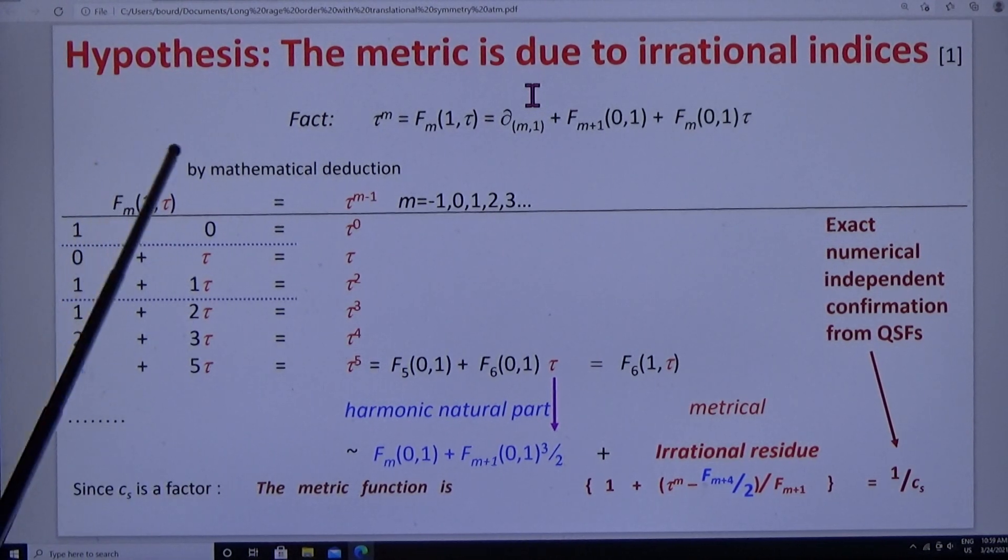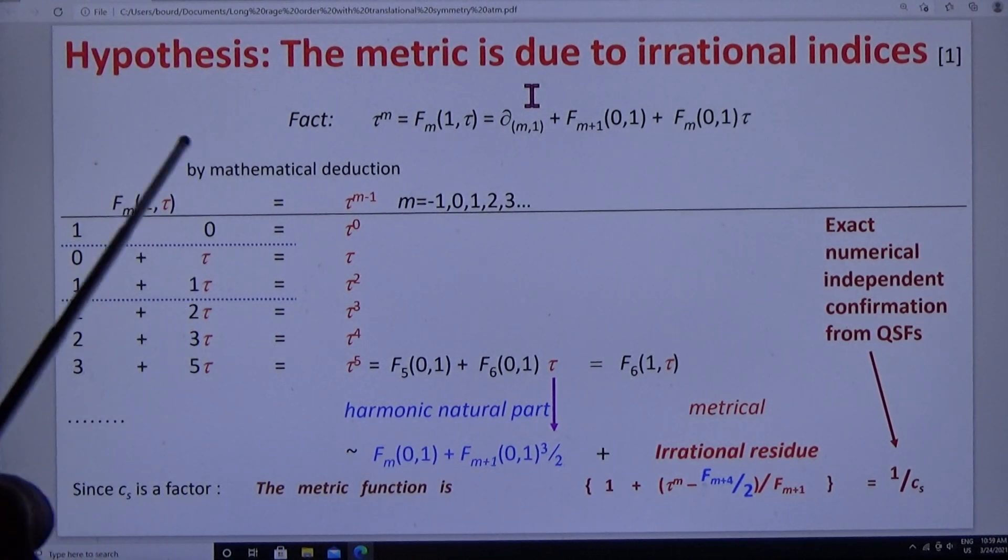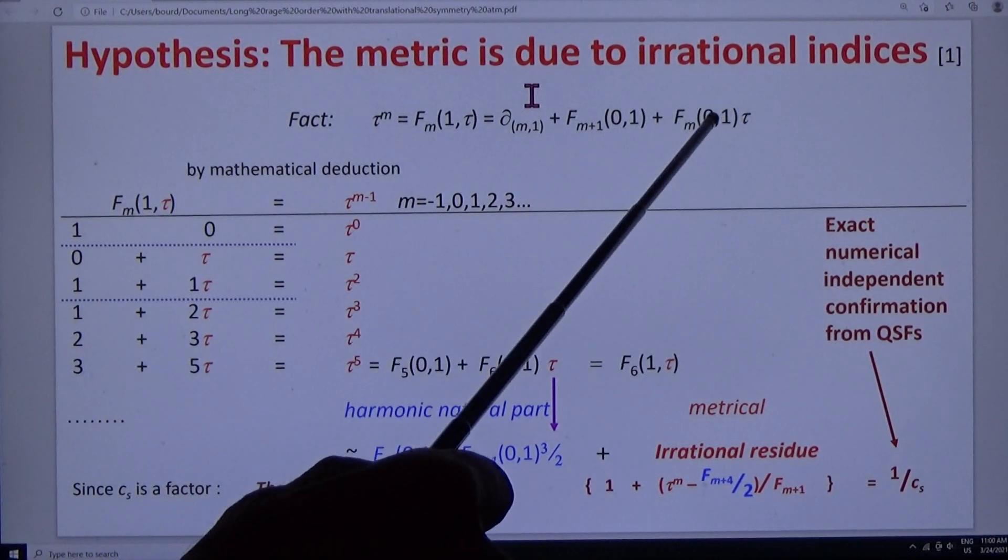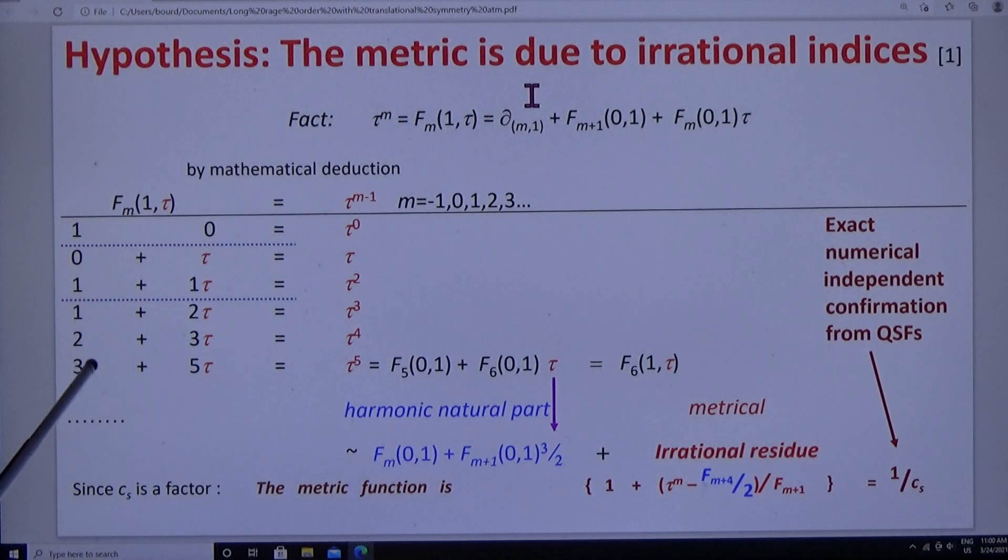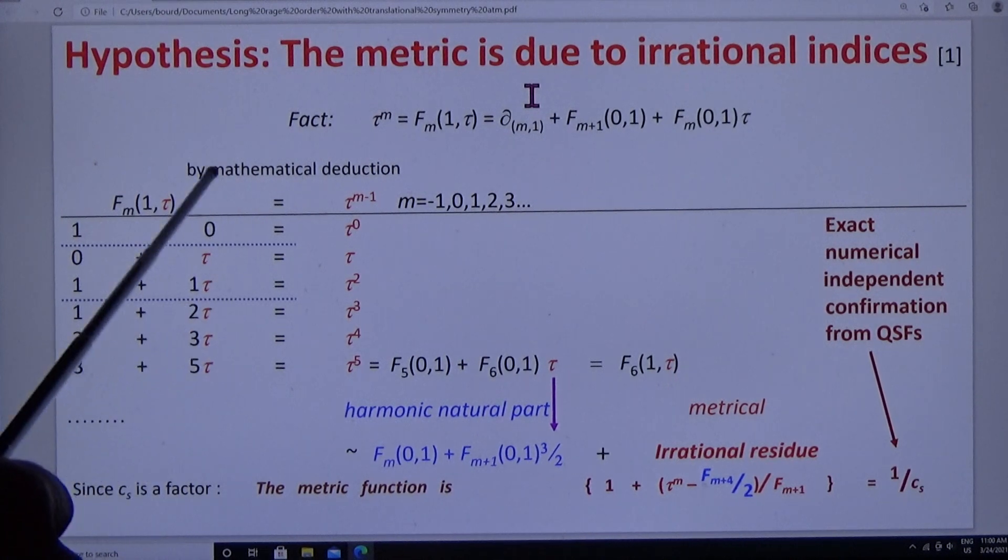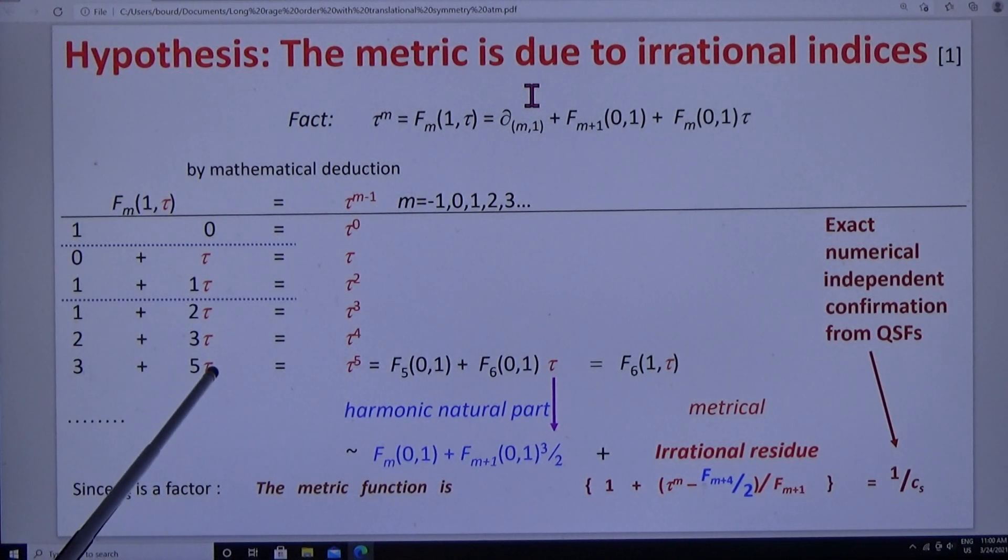But now comes an important feature. This series is the sum of two series, which are also Fibonacci. One of them is natural, the other is irrational, because of the factor tau.